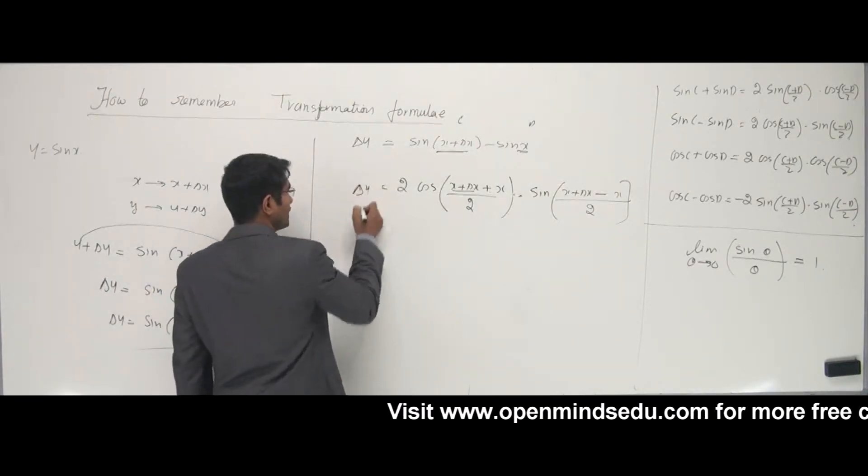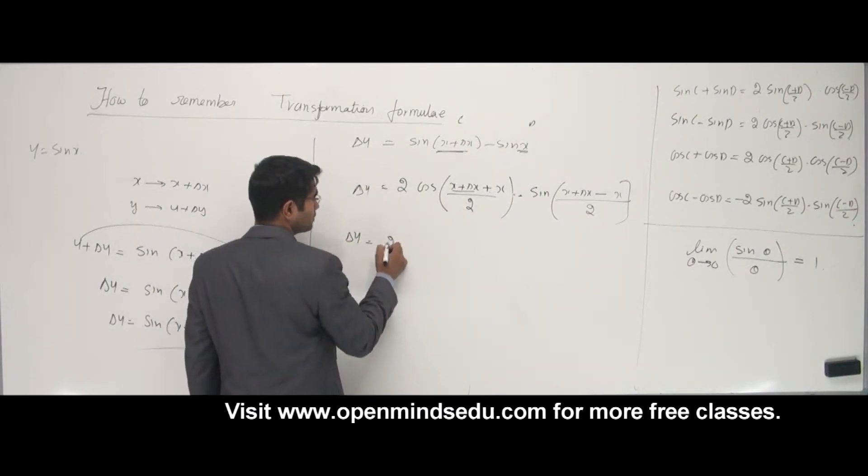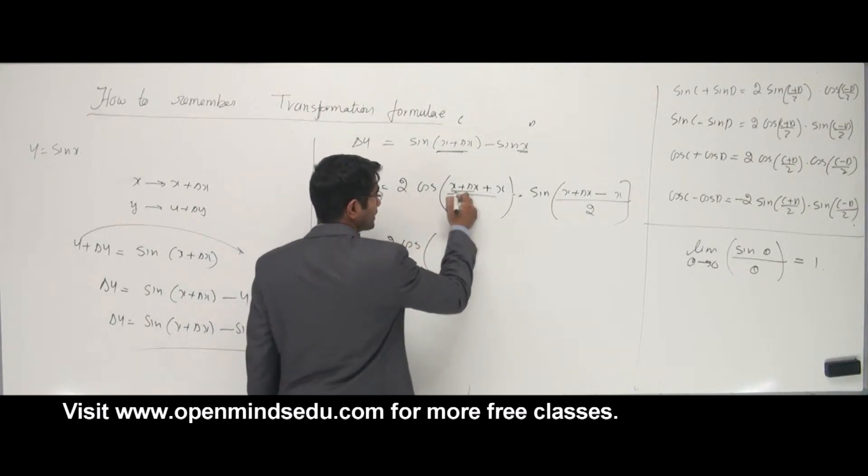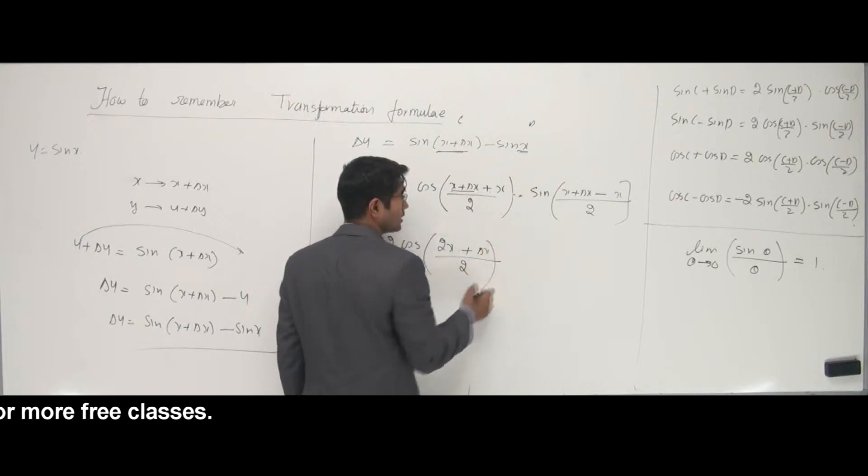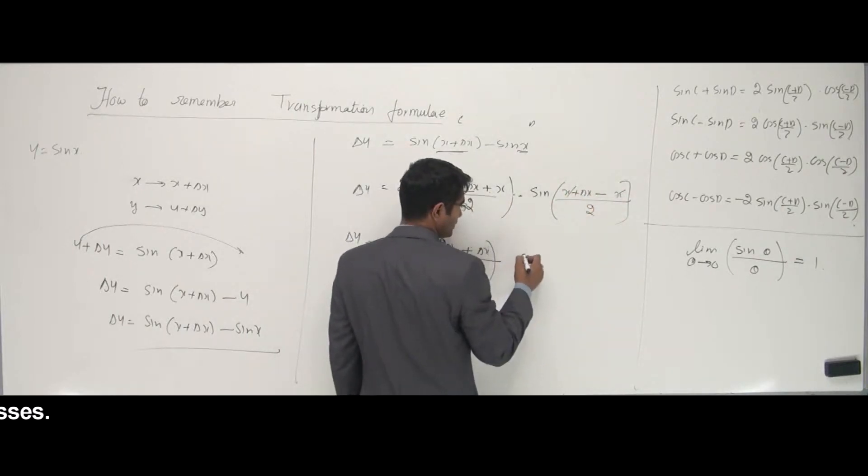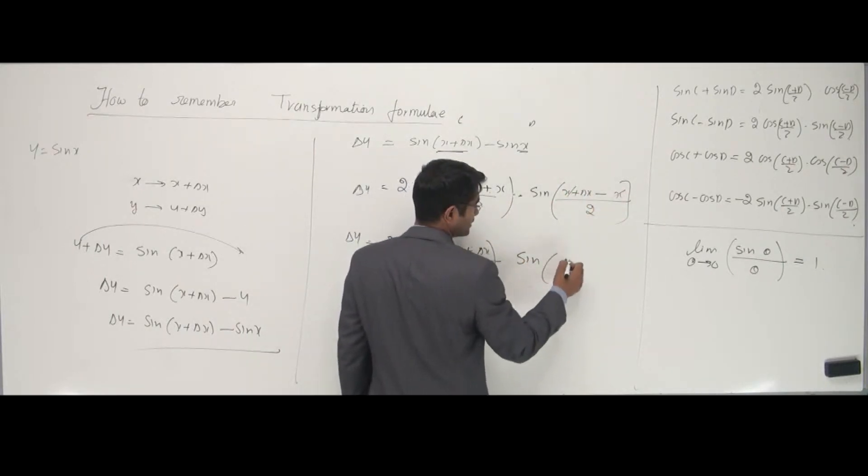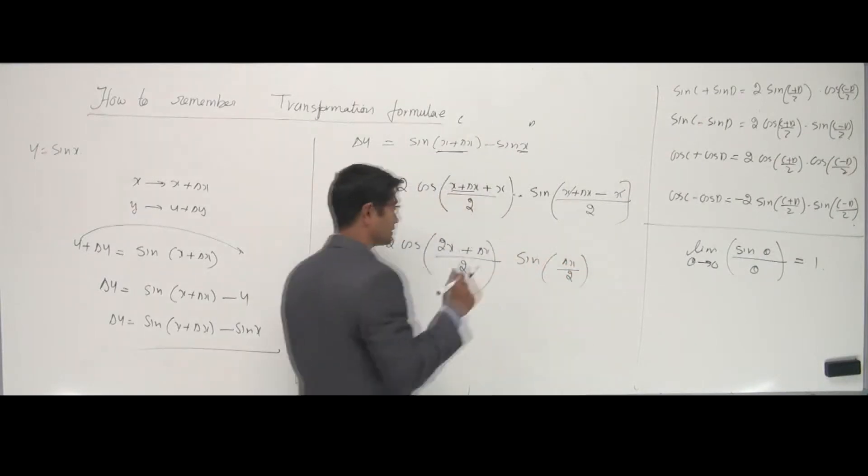Now, let's go ahead. I still have delta y here. And 2 cos, I can write 2x plus delta x divided by 2. And I can cancel this as sine of delta x by 2. That's what we have.